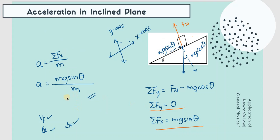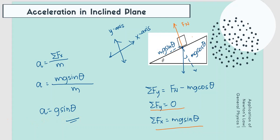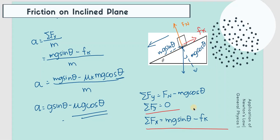If you simplify further, a equals g sine theta for the frictionless case. As you can see, we can eliminate the value of mass. This means the acceleration of an object on an inclined plane is dependent on the angle theta and not on the mass of the object. On another video, I'll be solving several problems involving this.